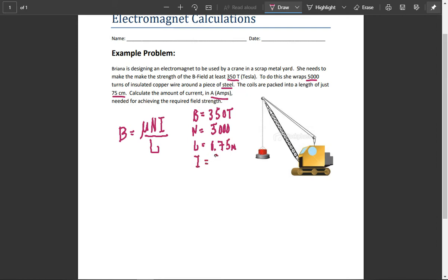We know that we're using steel, and if we look at a permeability chart for the permeability μ for steel, it's 8.75 times 10 to the minus 4.